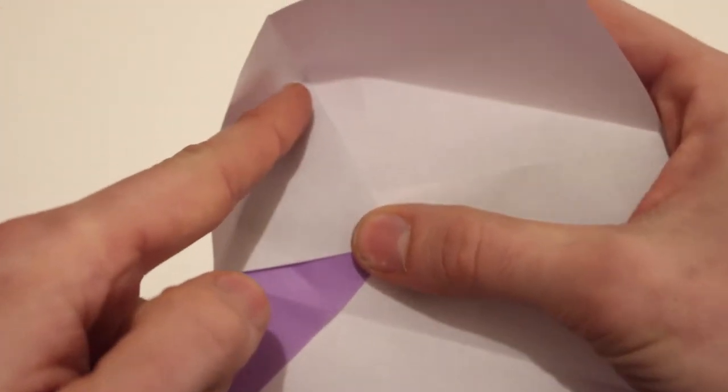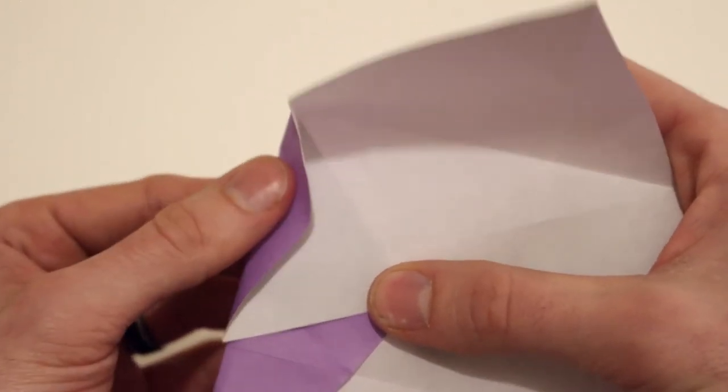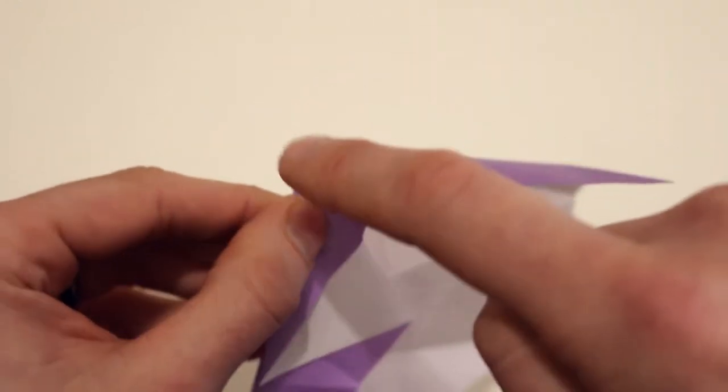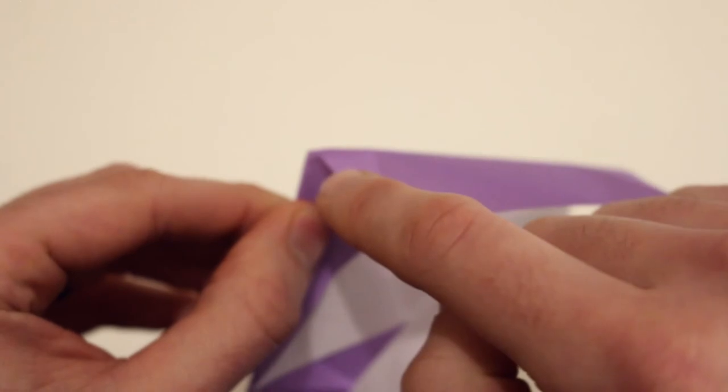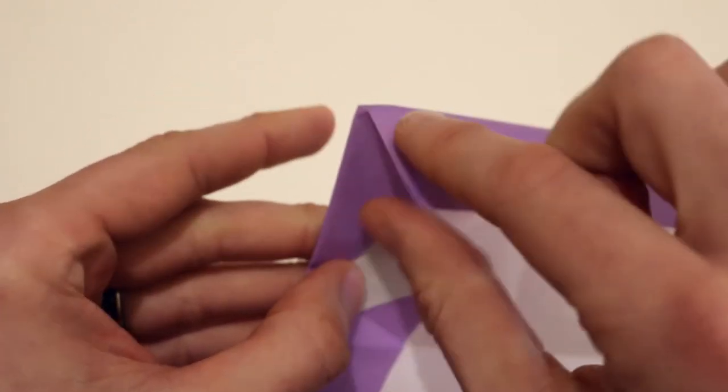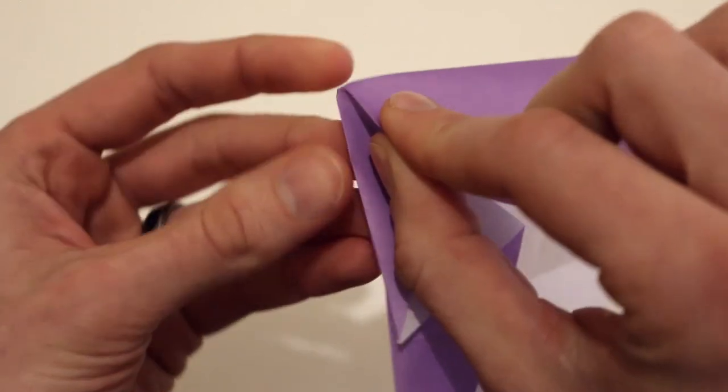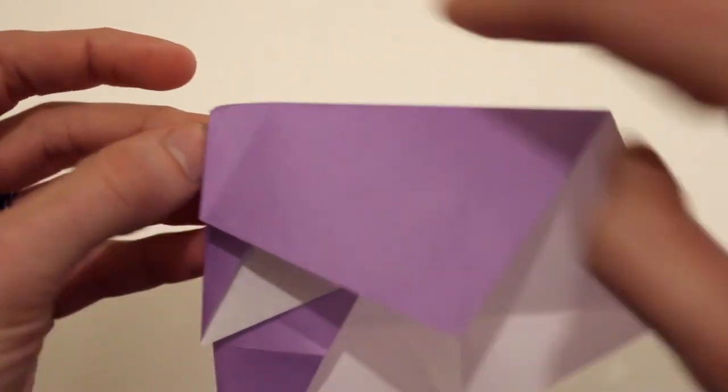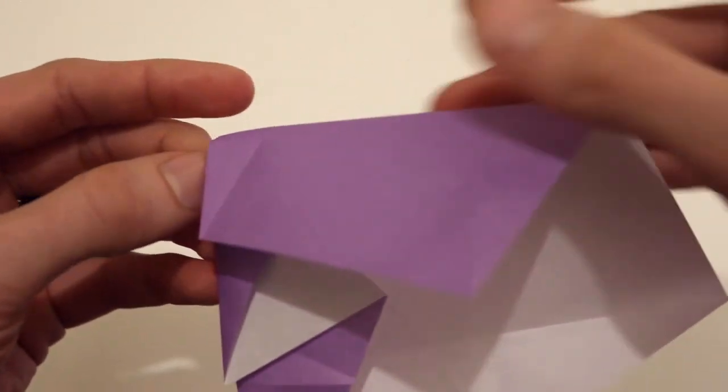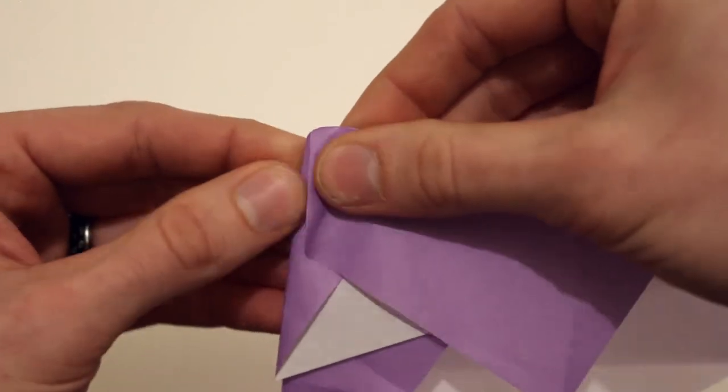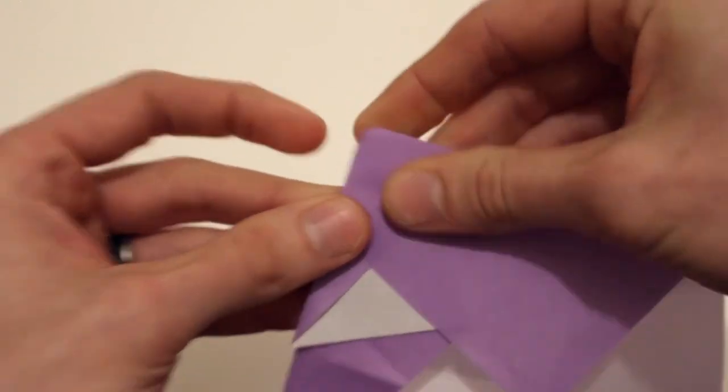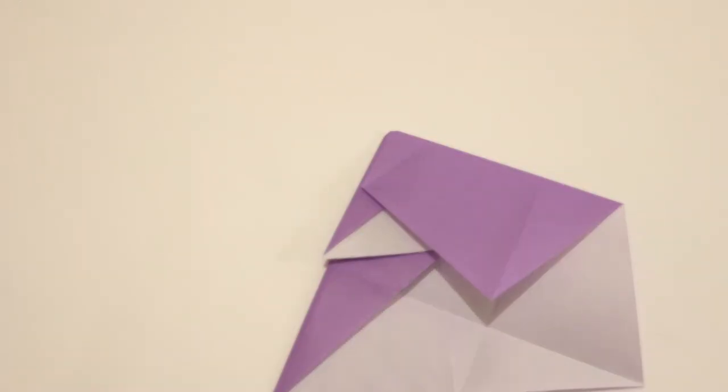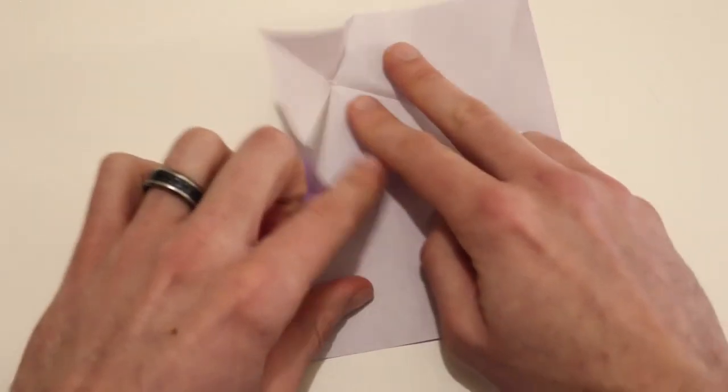Next we're going to form this valley fold right here. And don't flatten everything completely yet because we're going to take this crease here and bring it down to lie along this edge here. And we have this crease that's running across that's an existing crease. You can fold that one down and then if you just press everything down once that's folded, it should form those folds where they need to be. Then we're going to unfold all of that.